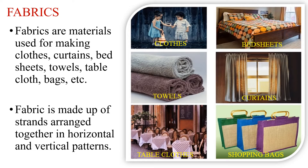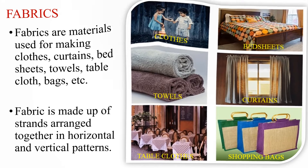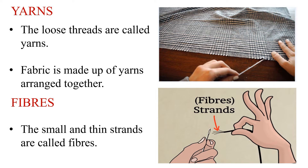Fabric is made up of strands arranged together in horizontal and vertical patterns. What are these strands? The loose threads that come out from a piece of cloth are called yarns. Fabric is made up of yarns arranged together, and these yarns are further made up of small and thin strands called fibers.